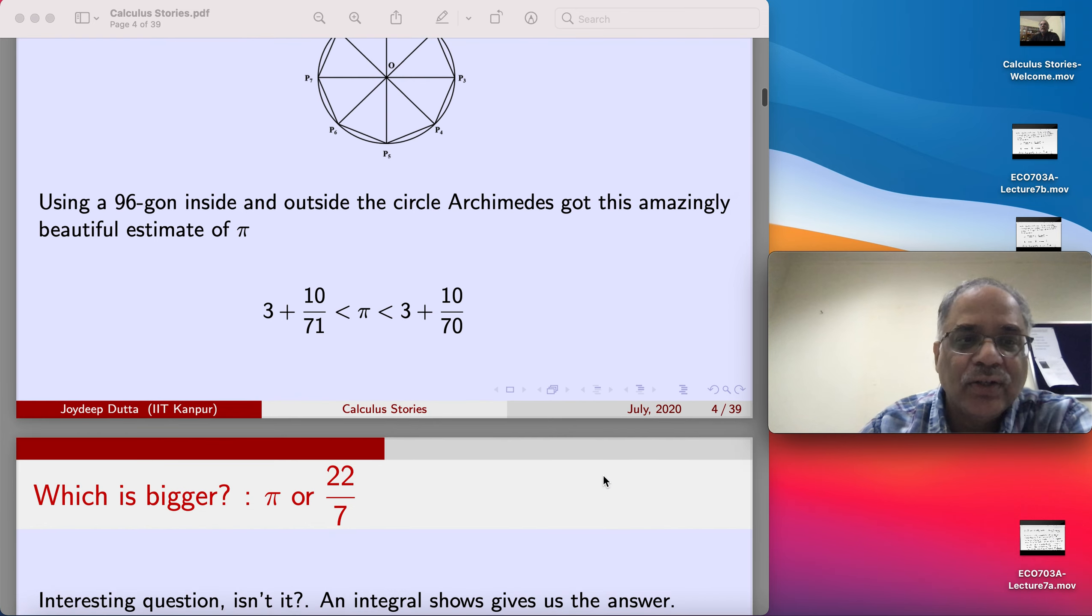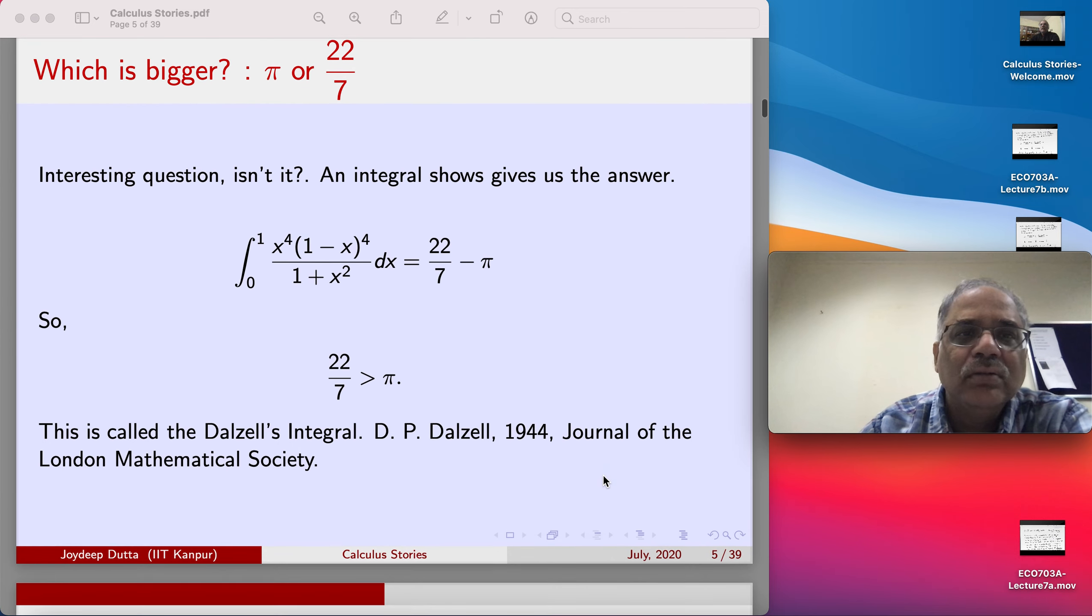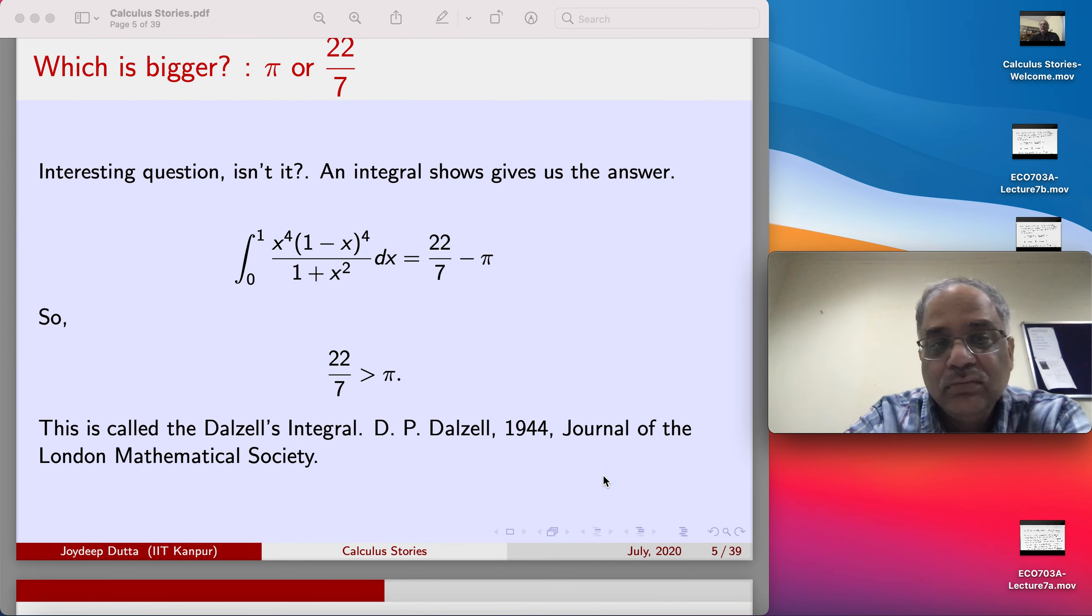Now which is bigger, pi or 22/7? That's the question. It's interesting.